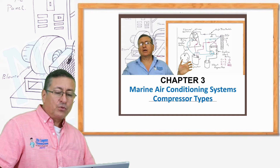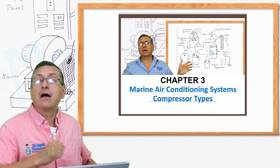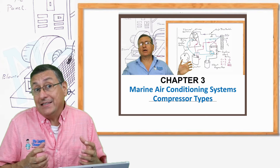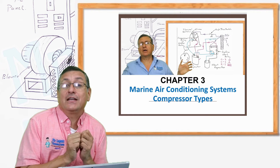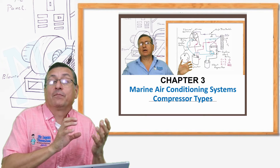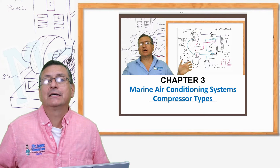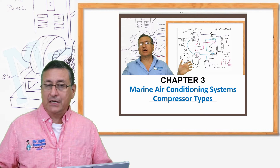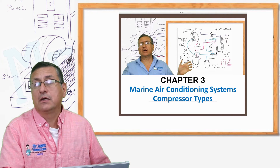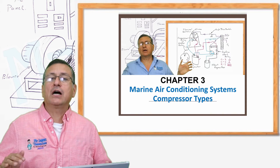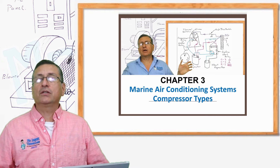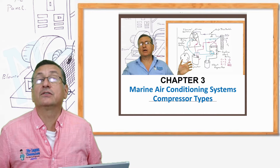This is chapter number two. In chapter number three, we are going to analyze the heart of the system: the compressor, and how the compressor works. Because this is the element that compresses the refrigerant and adds or removes pressure on the system. We are going to analyze the different types of compressors depending on the application, what types are commonly used in marine applications, and what types are used in industrial refrigeration systems.